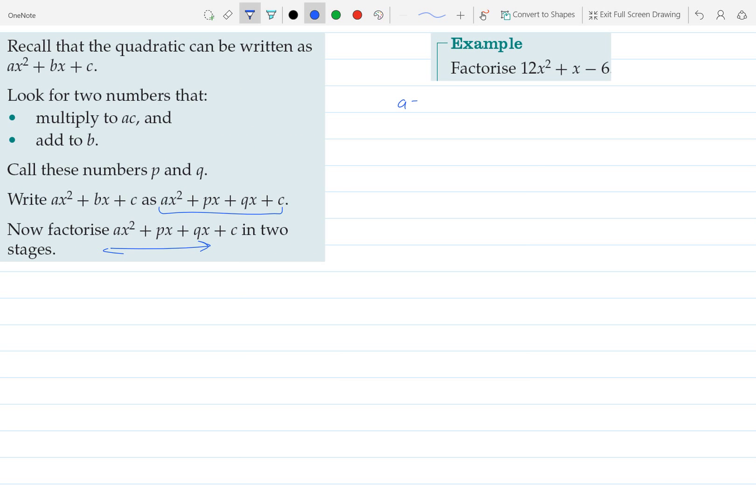So here a equals 12, b equals 1, and c equals -6. So ac equals -72. So we're looking for two numbers that times to -72 but add to positive 1. So that would be positive 9 and negative 8. So we're going to write this out again but we're going to write it as 12x².